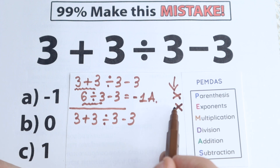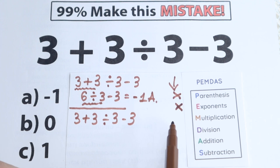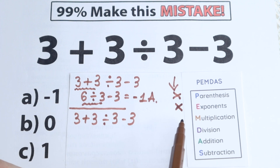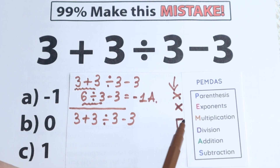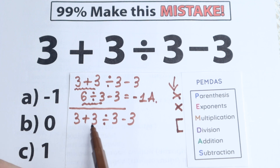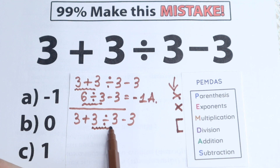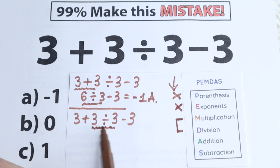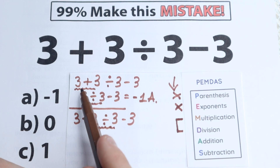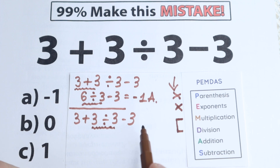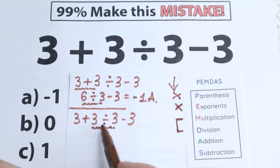We don't have parentheses or exponents, so those are skipped. Now let's go to the next step: Multiplication. But a lot of students make this common mistake — they forget about Division, because according to PEMDAS, multiplication and division form one common group and we treat them together. So let's find the multiplication and division signs. We have division right here, and we have subtraction. So our first step is to do 3 divided by 3, which equals 1.